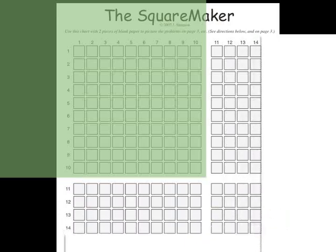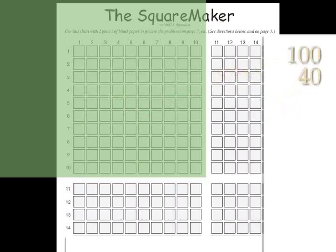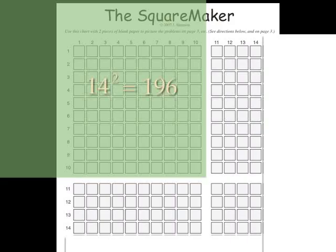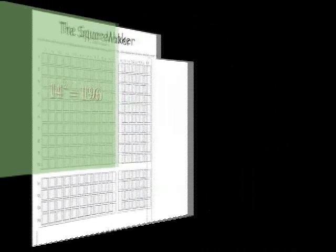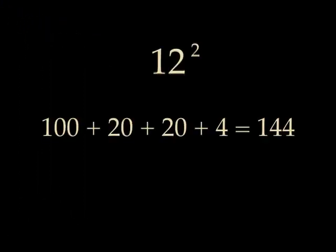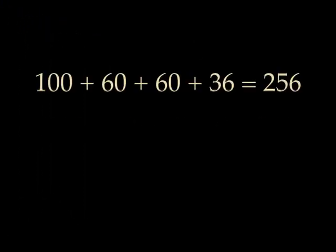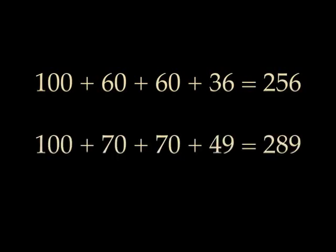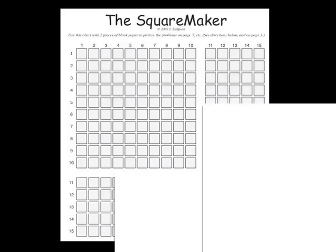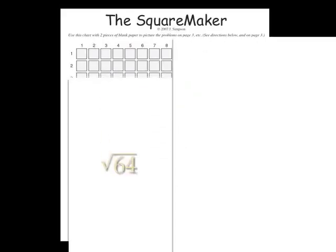Let's do 14 squared. We have seen students and teachers quickly internalize the Square Maker and mentally construct these squares not on the graphic, such as 16 squared and 17 squared — they simply extend the model. Students can also construct and figure out some roots on the Square Maker.